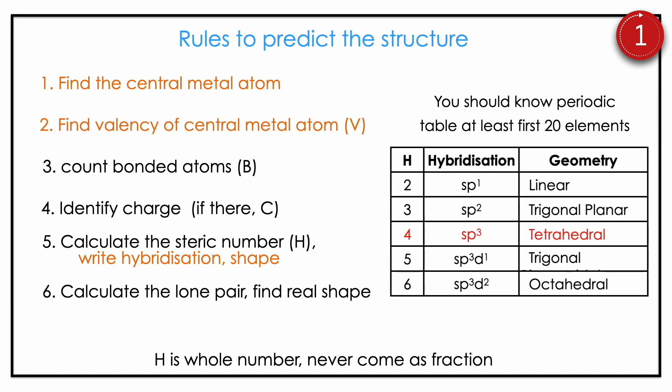Here is the prediction procedure: first find the central metal atom, then its valence, then count the bonded atoms, and find any charges. Apply the formula to get the steric number, then write down the hybridization, geometry, and shape. Calculate the lone pair, find the real shape, and remember the difference between shape and geometry. One important fact: H should always be a whole number — never a fraction. To make this work, you should memorize at least the first 20 periodic elements, because you need to know their valence.